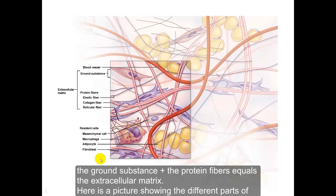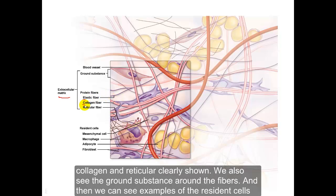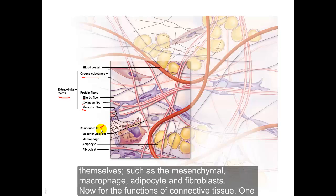Here is a picture showing the different parts of the extracellular matrix. We can see the protein fibers — the elastic, collagen, and reticular — clearly shown. We see the ground substance around the fibers, and then examples of the resident cells themselves, such as the mesenchymal cell, macrophage, adipocyte, and fibroblast.